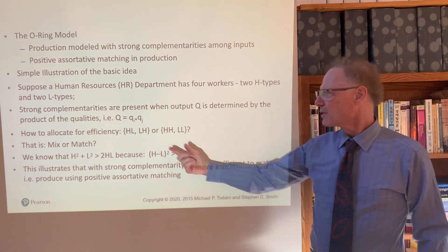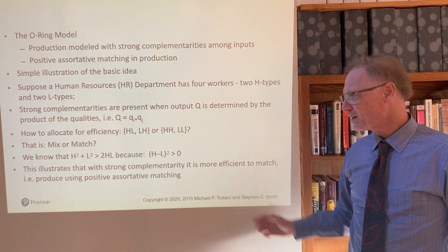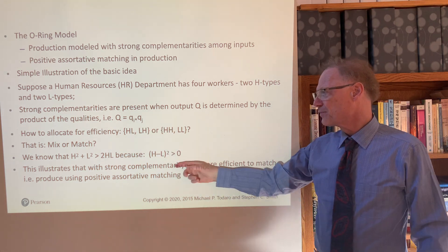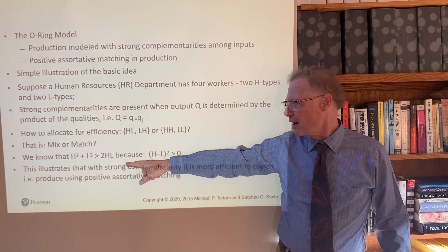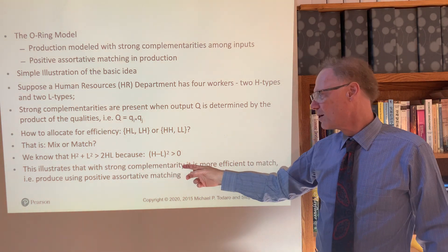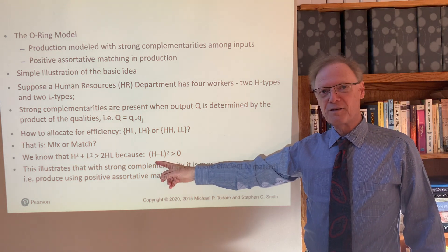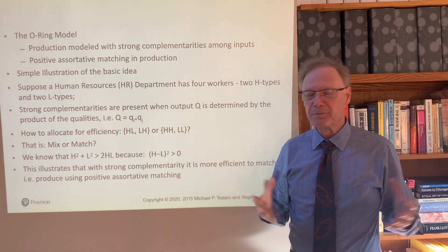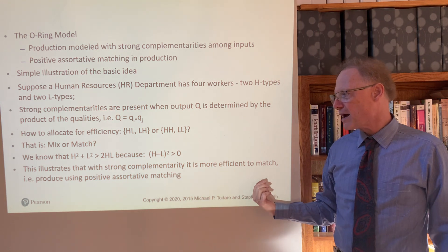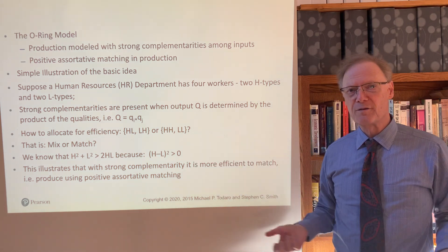So, do we mix or do we match? Do we have H times L and L times H, or do we have H times H and L times L? The answer is very simple: there's going to be positive assortive matching — the H's and L's will be separated. We know this because H² + L² will always be greater than 2 times H times L. That just follows from a result you see in introductory algebra, and holds as long as H and L are not the same number. This illustrates that with strong complementarities, it's more efficient to match — positive assortive matching.